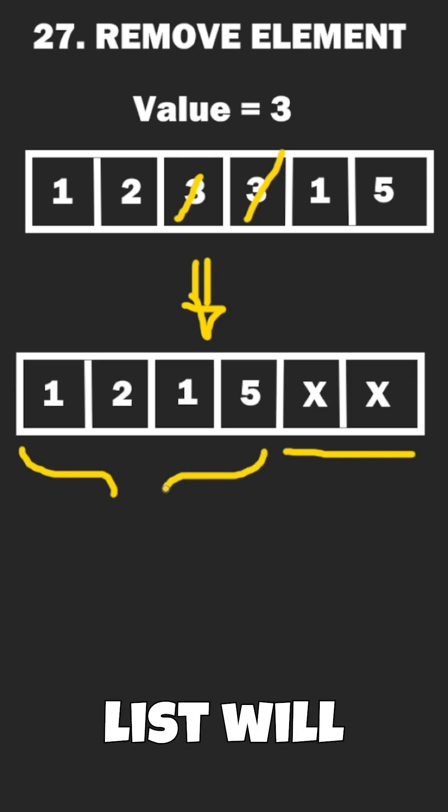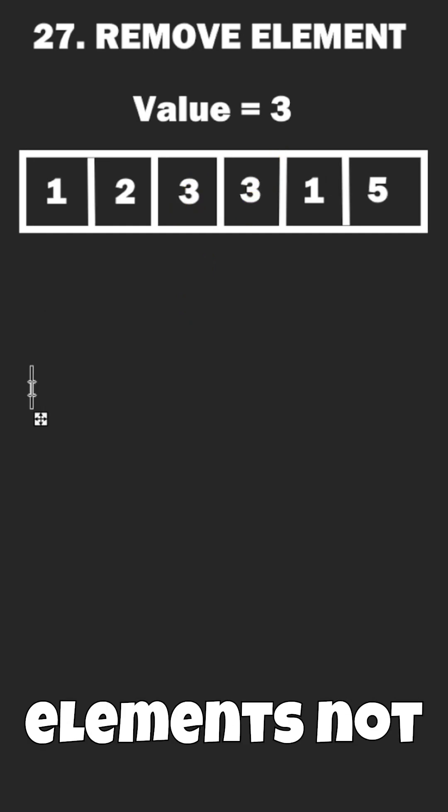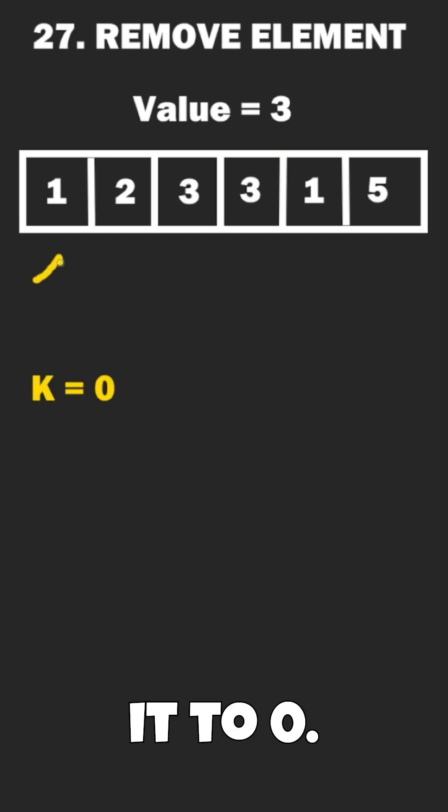Ignoring the remainder at the end of the list, we'll return the number of elements at the front. To begin, we'll say the number of elements not equal to value is k and set it to zero.